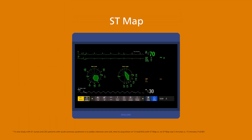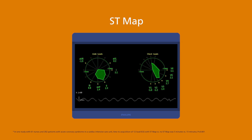Philips ST-Map collects ST values and trends from all measured limb and chest leads and provides a patient's ST values in an easy-to-read multi-axis diagram that allows you to quickly and easily identify ST changes and their approximate locations.